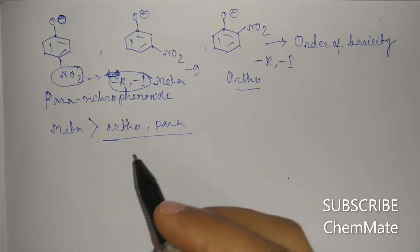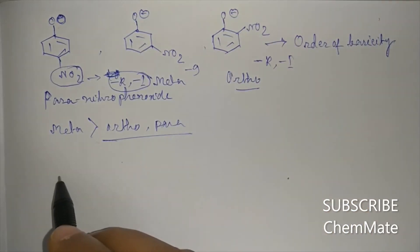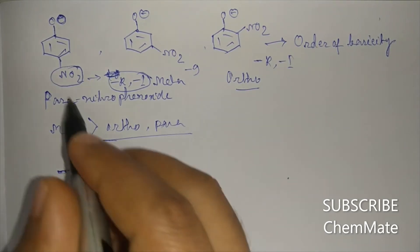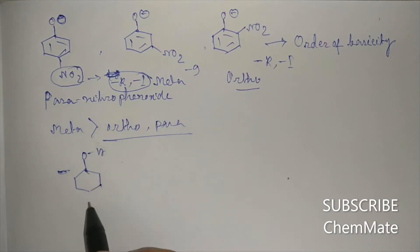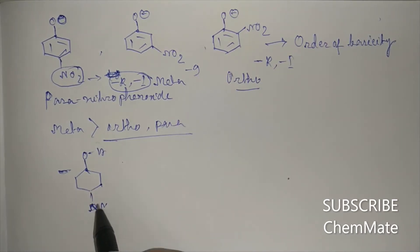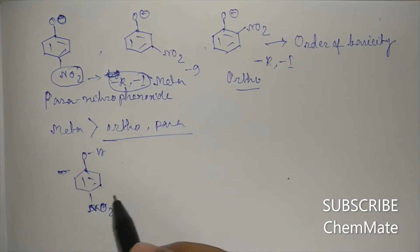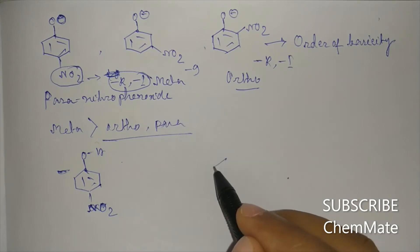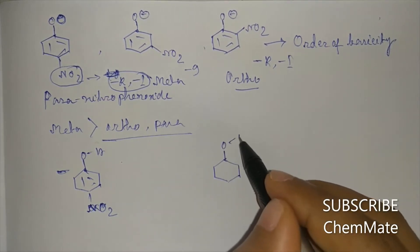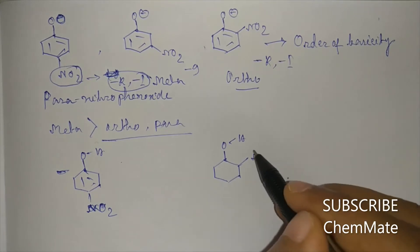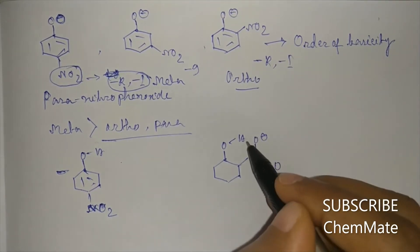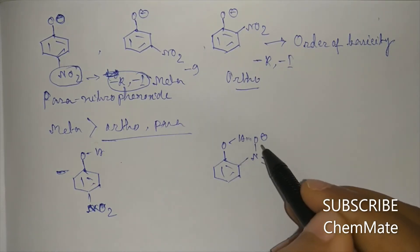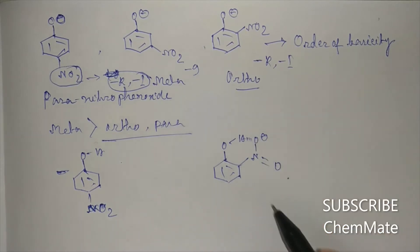Now we have to compare between ortho and para. If we see the acid of this conjugate base — this is para nitrophenol, the acid of this conjugate base — and this is ortho nitrophenol. In ortho nitrophenol there is hydrogen bonding between this hydrogen and O minus.